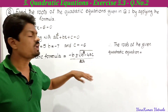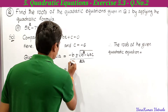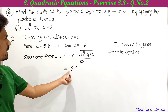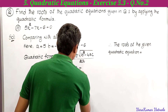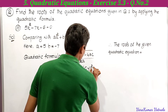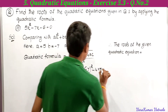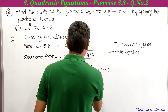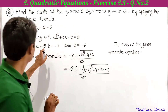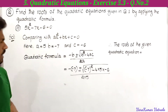Substituting the values: minus b, with b = −7, gives minus(−7) = +7; plus or minus square root of (−7)² minus 4 × 5 × (−6), divided by 2 × 5.